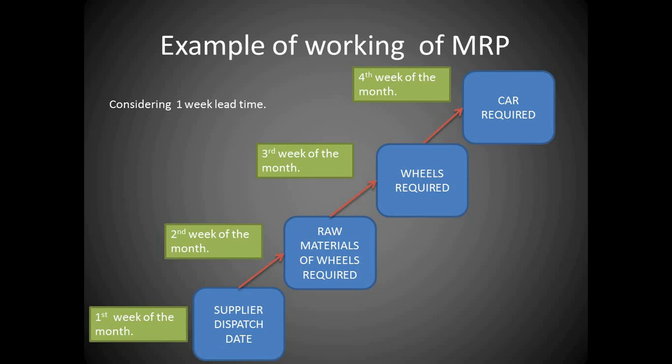And then wheels required should be by third week of the month. The raw materials which are required for the wheels should be within the production place by second week of the month. And therefore, the supplier has to dispatch the particular raw material which is required for wheels to be assembled in the first week. That depends upon lead time.